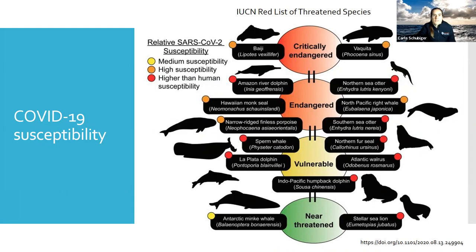The yellow circles on the name tags stand for medium susceptibility, orange for high, and red suggests an even higher susceptibility than humans for COVID-19. This is not necessarily surprising because empirically we know that marine mammals have died of coronaviruses. I'd like to remind everyone, however, that this was a prediction study based on publicly available genetic information.